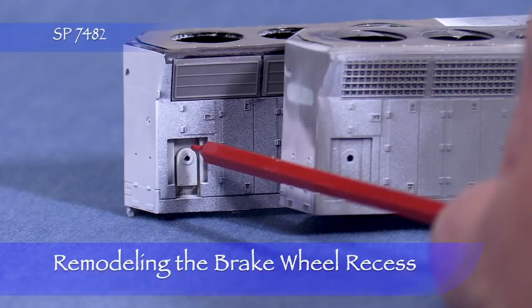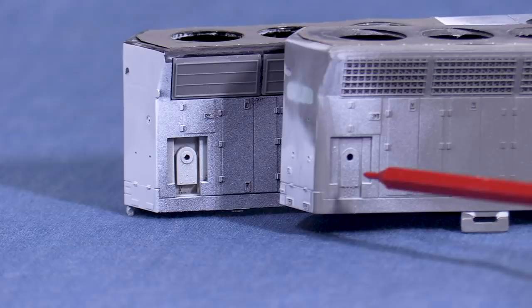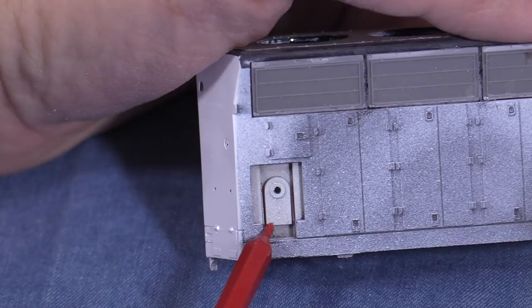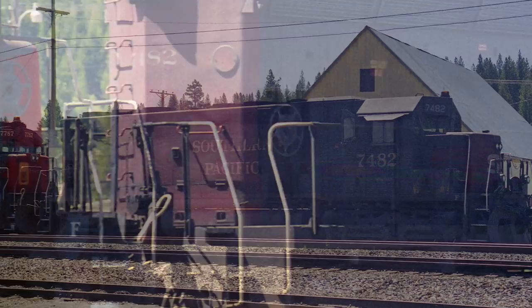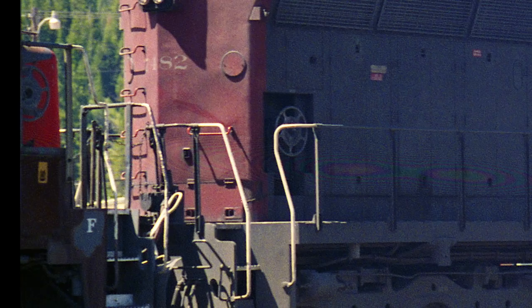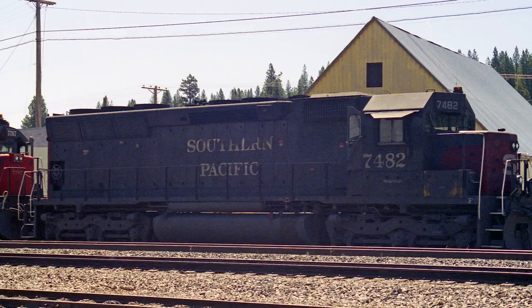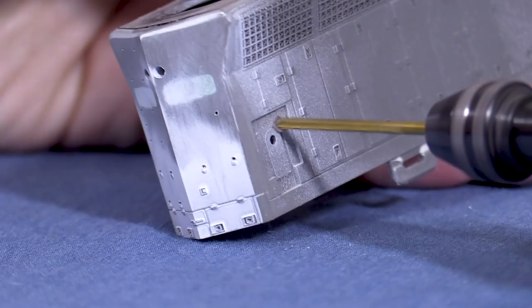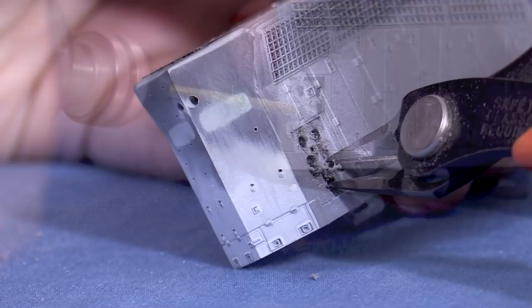As I was working on the two SD45 shells, I noticed that the Proto 2000 shell that I'm using for SP7479 has a better brake recess than the Kato shell I'm using for 7482. The recess on the Proto shell has more depth and looks more like the real thing, while the recess on the Kato shell is very shallow. Before I start adding more fragile parts, I want to do some surgery on 7482 to correct this. I want to cut out the interior of the brake recess while leaving the rest of the shell intact, so I have to be very careful here. I'll start by drilling a series of holes.